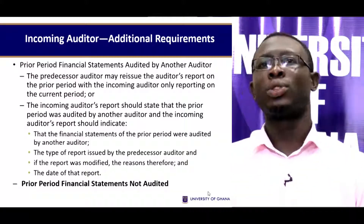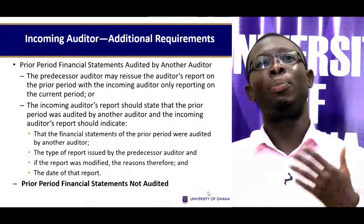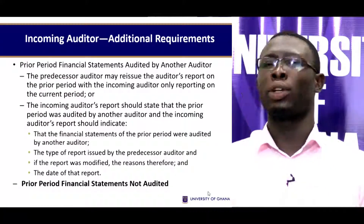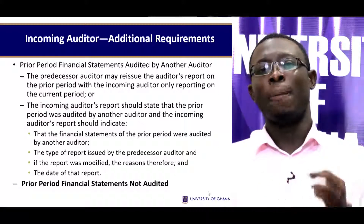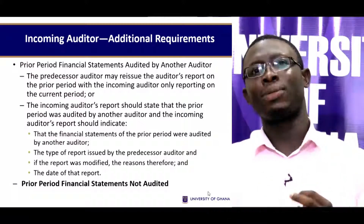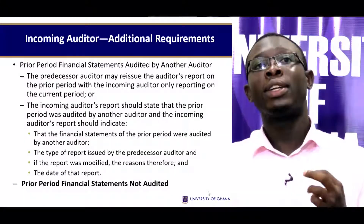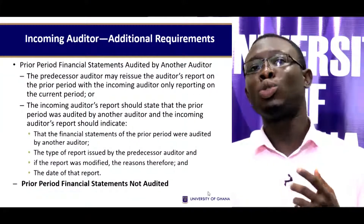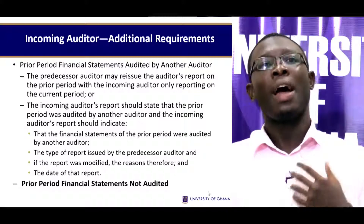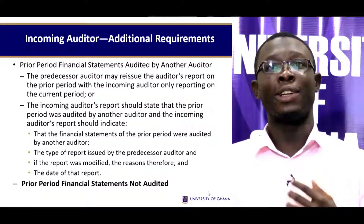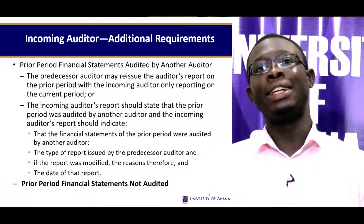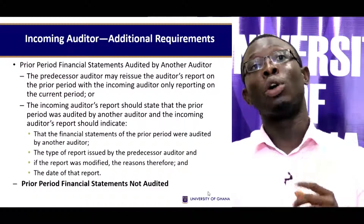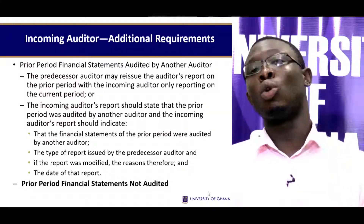The incoming auditor's report should state that the prior period was audited by another auditor. The incoming auditor's report should indicate: one, that the financial statements of the prior period were audited by another auditor; the type of report issued by the predecessor auditor and, if the report was modified, the reasons therefore; and the date of that report. Prior period financial statements not audited also needs to be stated.